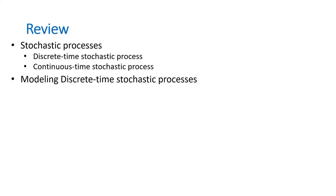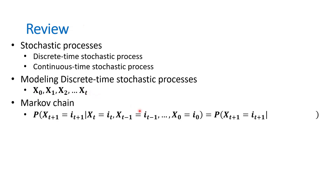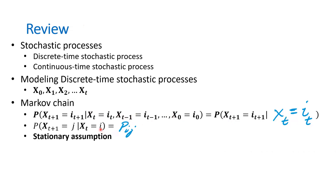We modeled stochastic processes with X_t, the random variable representing the state of the system at time t. X naught is the state of the system at the beginning. A Markov chain is a special case of a discrete time stochastic process in which the probability of being at a certain state at time t+1, given the full history of previous states, is the same as the probability given only the previous state X_t. We write P_ij as shorthand for this conditional probability.